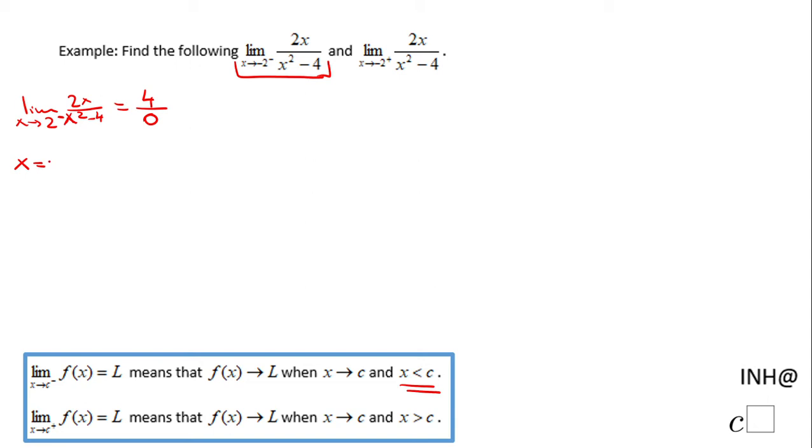Now since it's 2 minus, I'm going to go with a number less than 2, 1.9 for example, and this expression becomes 2 times 1.9 over 1.9 squared minus 4. That's 3.8, and let's see, 1.9 squared minus 4, that is negative 0.39. So I'm going to divide these two numbers now and I end up with negative 9.74743. I'm going to keep the first three decimals.